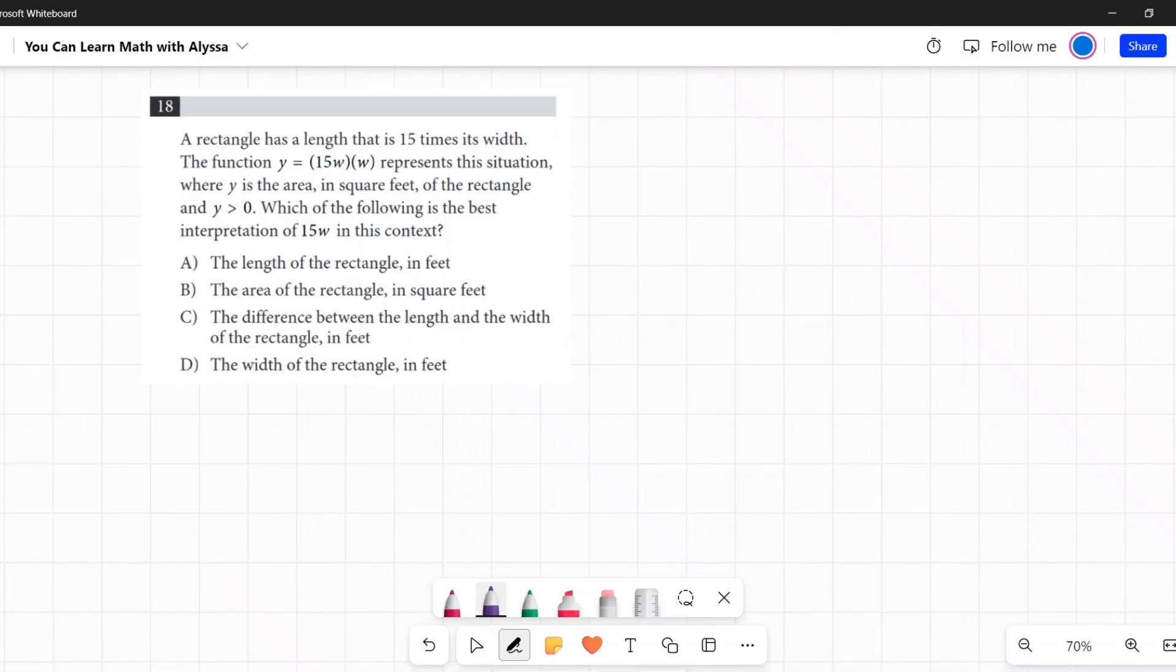Number 18. A rectangle has a length that is 15 times its width. I always start drawing. The instant they tell me I have a shape of some sort, I'm always going to start drawing.